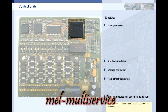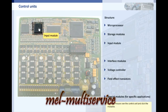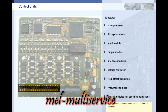The microprocessor is the central module in a control unit. It performs all the arithmetic calculation functions and controls the processes in the control unit. The storage module stores various information, including the microprocessor program, fixed data such as characteristics, and variable data such as operating conditions. External signals are sent to the input modules, which prepare them for processing by the microprocessor. The operations calculated by the microprocessor are sent to the output modules, which convert and amplify the signals so that various electrical components can be connected. The freewheeling diodes protect the circuits in the control unit from induced voltage.